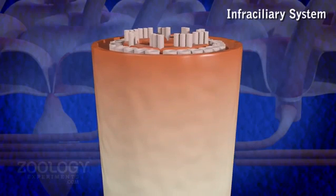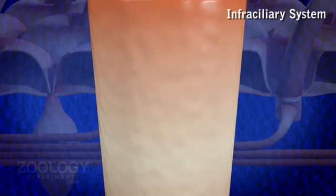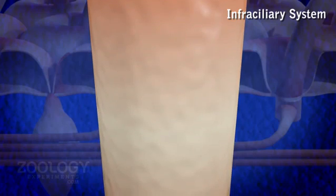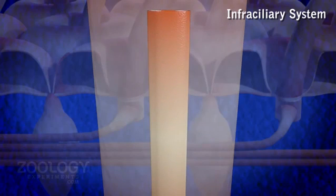It is formed by the thickened basal end of peripheral fibers of cilium. Each basal body is either a centriole or its derivative.